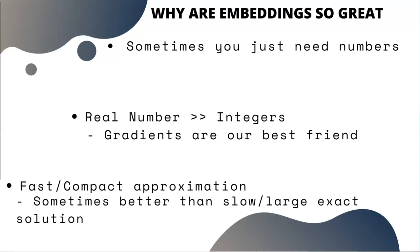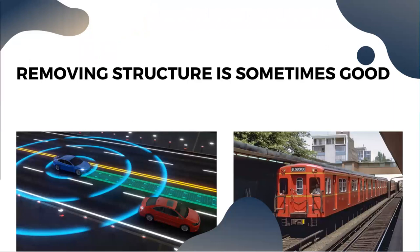Sometimes fast and compact approximations are better than slow and large exact solutions. If you have a huge network or big structure you can't really work with, you can do away with the structure and work with the embedding approximation. For example, the road network for self-driving cars is really bad to work with — sometimes things are painted, sometimes they're not — so you can't automate from the road network structure. Instead, self-driving cars use LiDAR and camera sensors and make decisions based on best guesses. Doing away with the structure is the only solution to some problems.